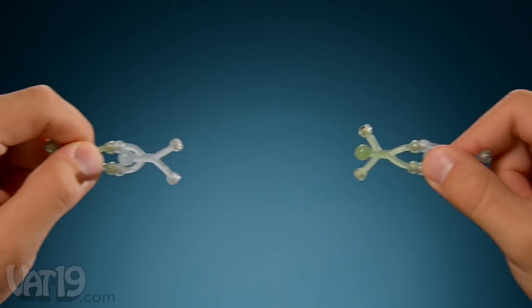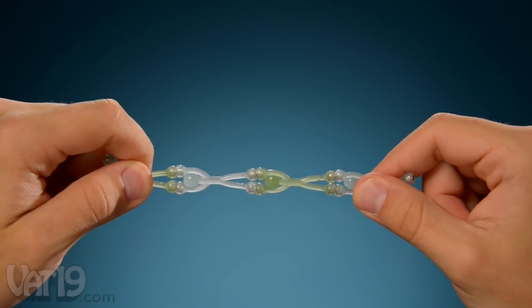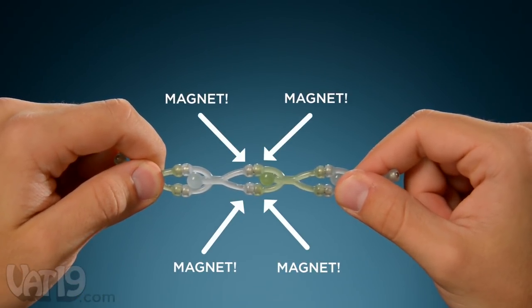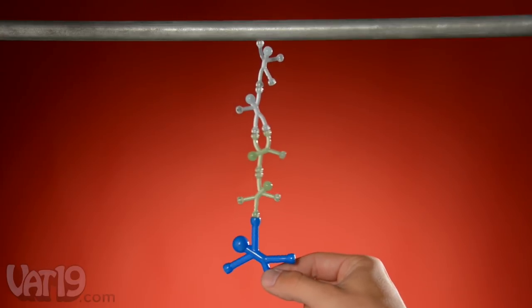His flexible PVC rubber body has four powerful magnets located in each of his extremities, just like his larger Q-Man brethren.